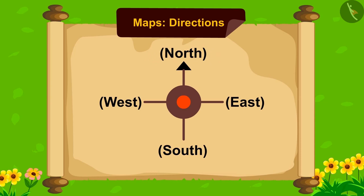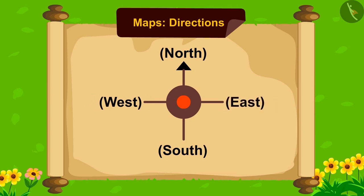The end of the arrow points towards the south. Towards the left of north is west, and towards the right is the east direction.